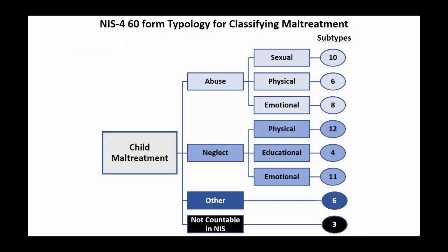NIS employs a common definitional framework classifying children according to types of maltreatment as well as the severity of maltreatment. The typology includes 60 categories: 10 forms of sexual abuse, 6 forms of physical abuse, 8 forms of emotional abuse, 12 forms of physical neglect, 4 forms of educational neglect, 11 forms of emotional neglect, and 9 other maltreatment subtypes. For example, subtypes for physical neglect include unwarranted delay or failure to seek needed care, and inadequate supervision.